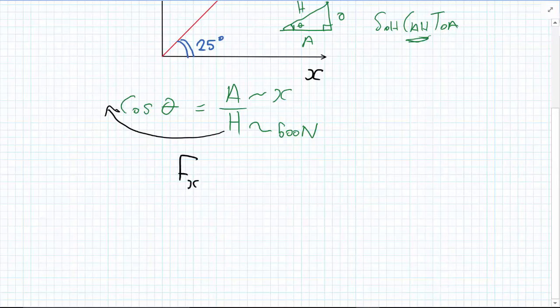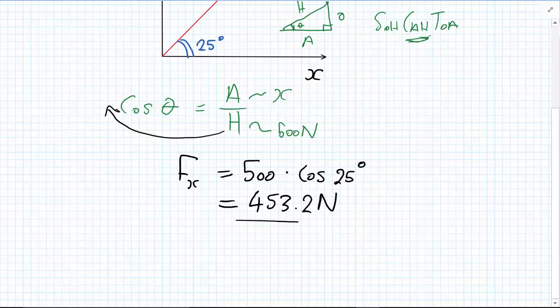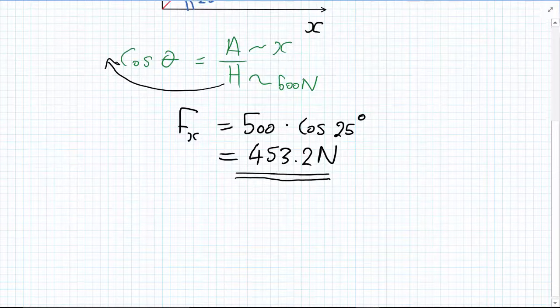Equals 500 newtons multiplied by the cos of the angle, which in this case is 25 degrees. And I put that into my calculator and I get 453.2 newtons. As that's an important answer, I like to double underline it so I can find it easily in my notes.